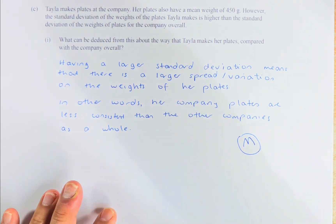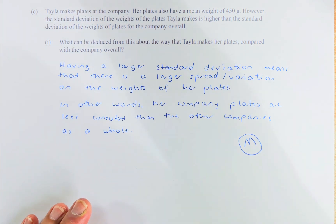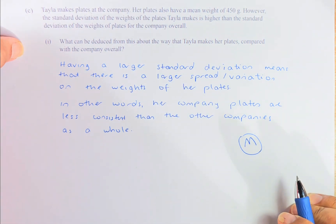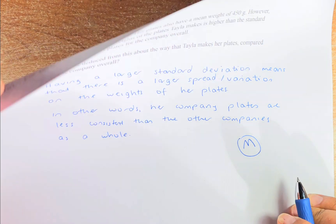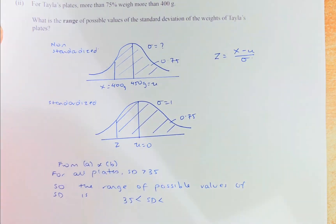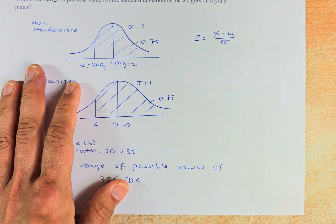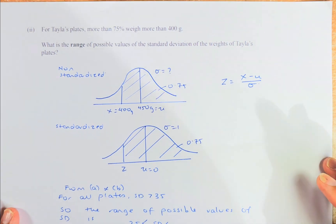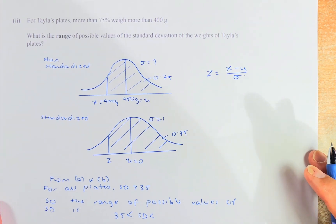She has a higher standard deviation means she has a higher variation. Her plates are less consistent than the overall company's plates. That's a merit and 5 for you. Now we're going to do part 2. Part 2 is an excellence question. We shall need to bring a calculator to solve this. I'm going to adjust the paper and we are going to bring in the calculator.